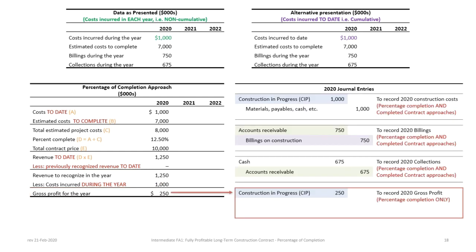Now that we have our gross profit, we can prepare the final journal entry, which records the gross profit and is applicable only to the percentage of completion approach. The previous three entries applied to both percentage of completion and completed contract; this last one is only for percentage of completion.